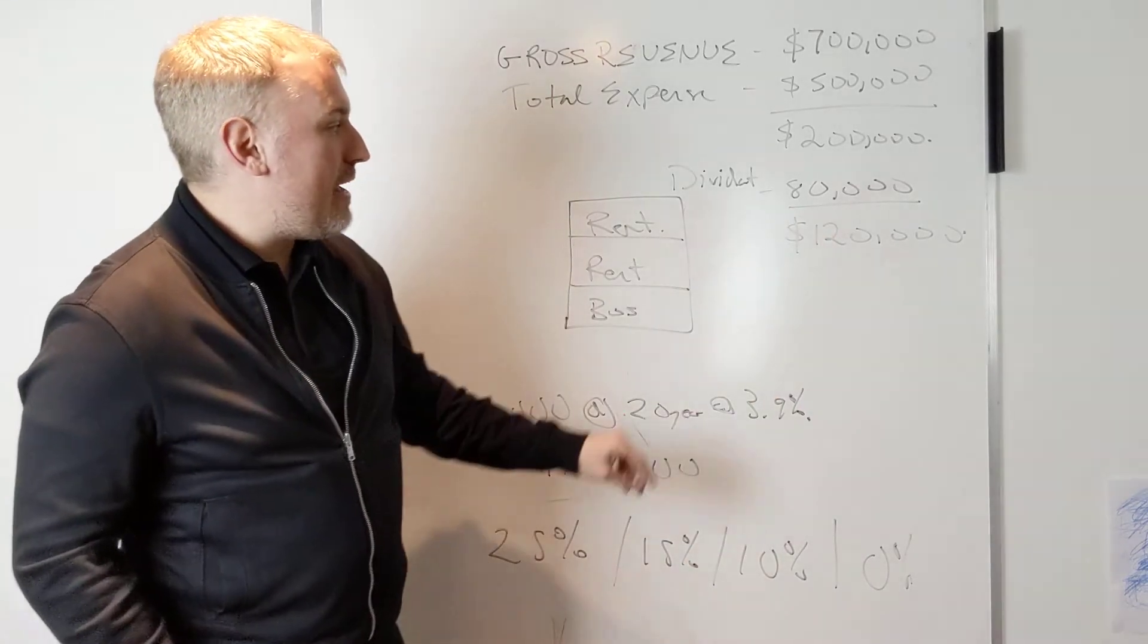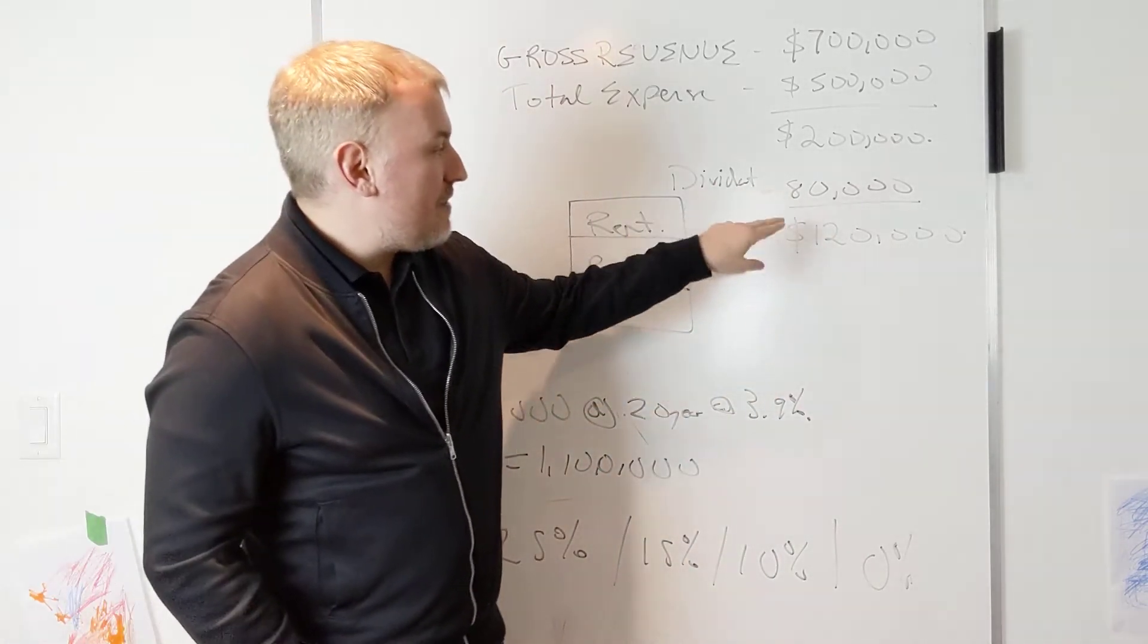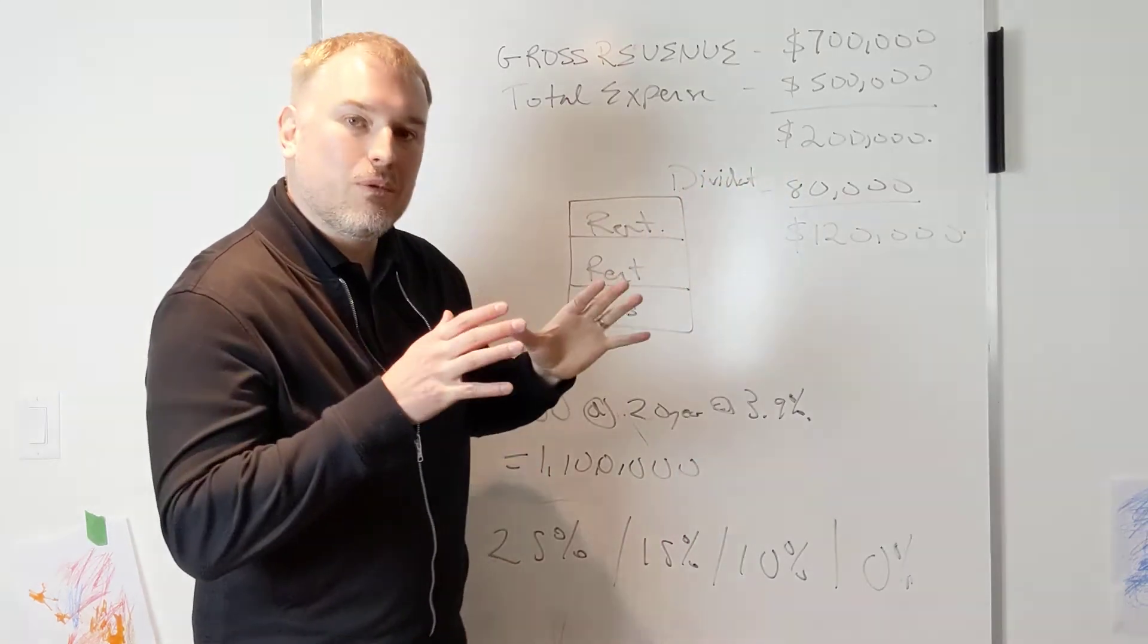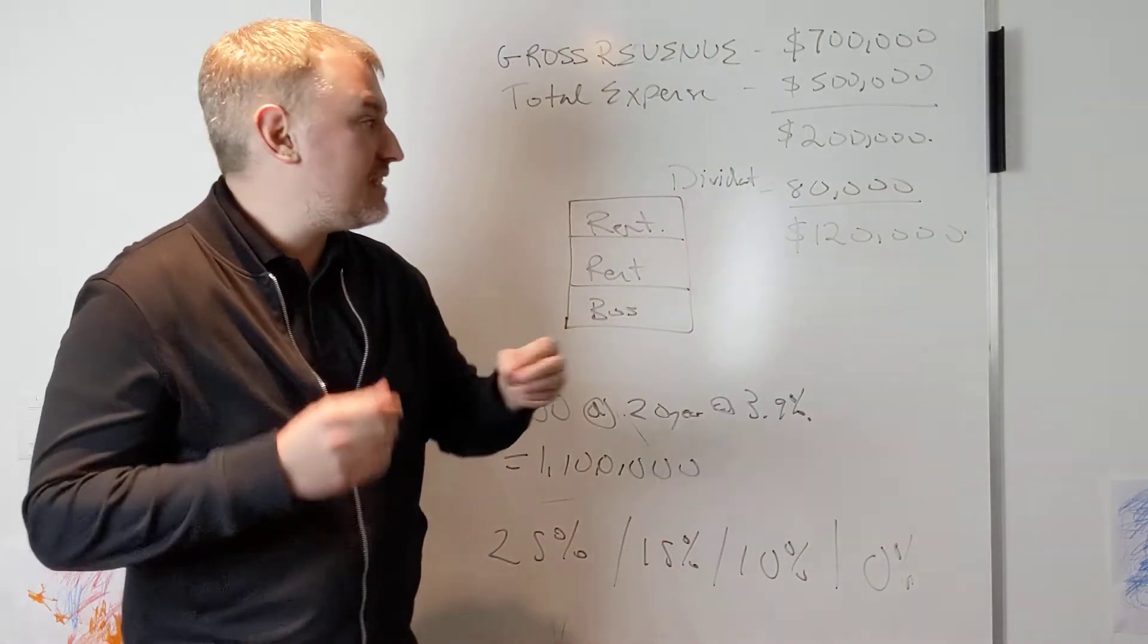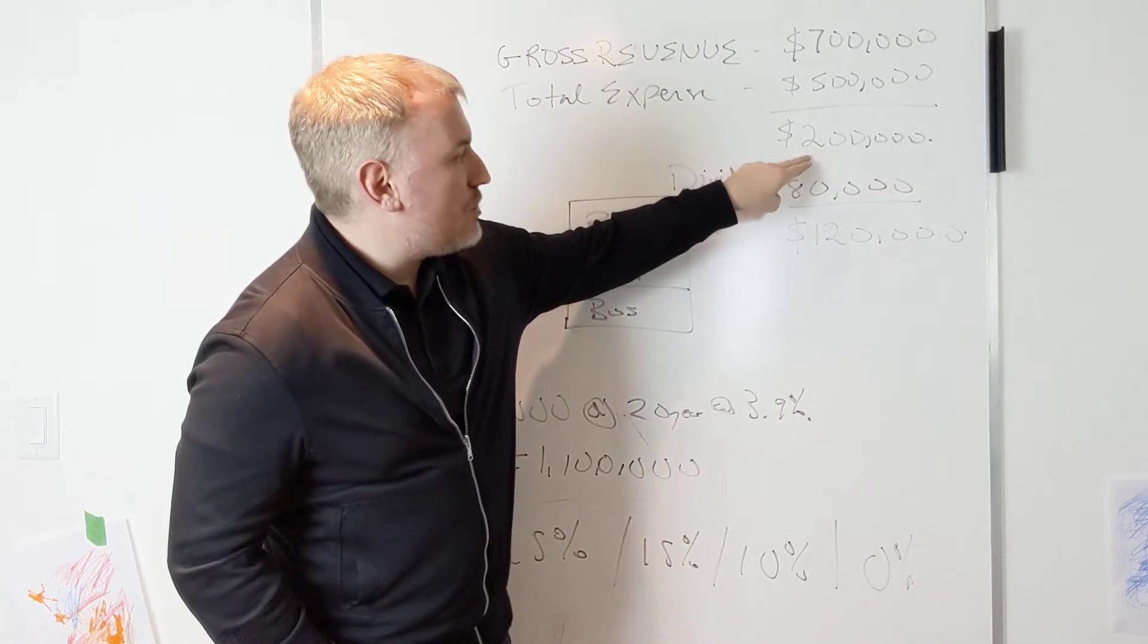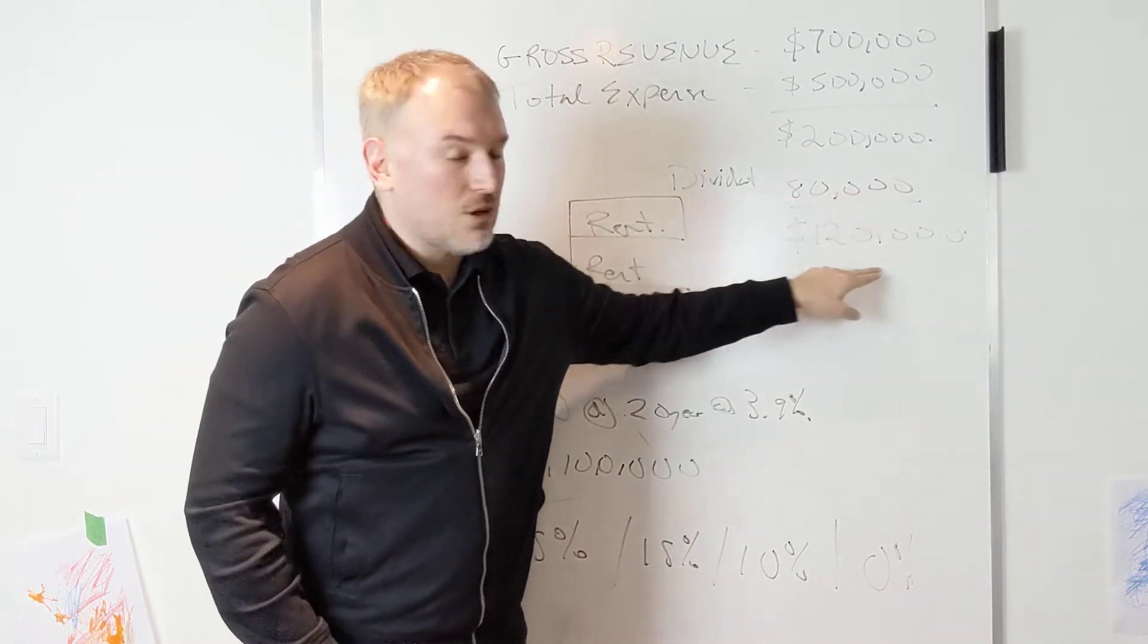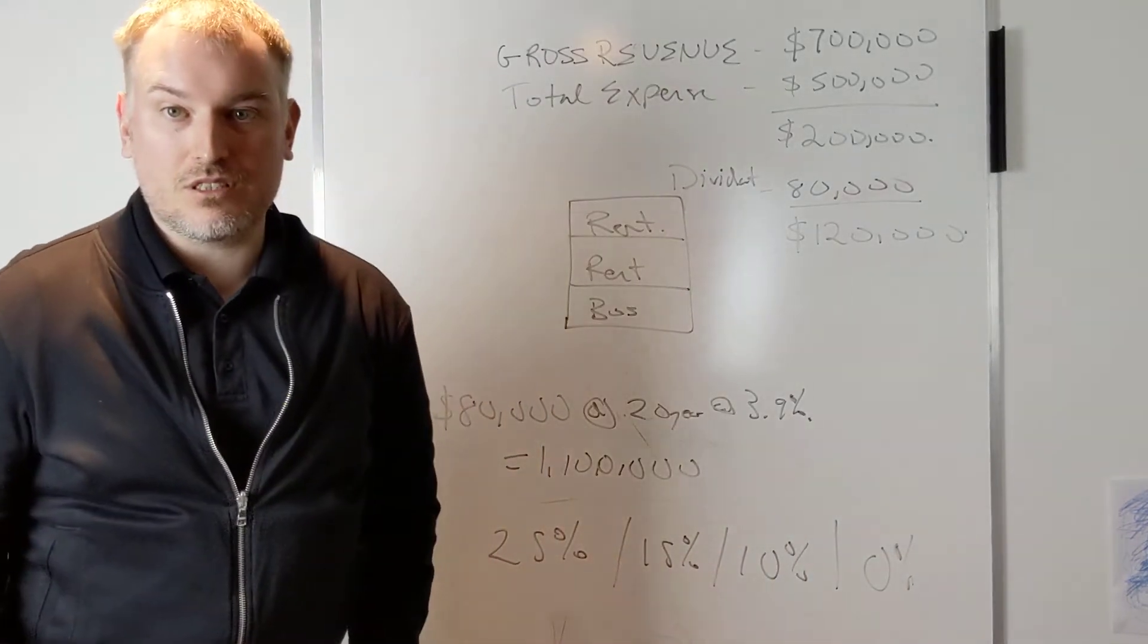So what's going to happen is the bank is going to look at if you paid out the $80,000, they're going to say okay, from a corporate point of view the company itself is not making $200,000, it actually paid its owners $80,000. That means we're only working with $120,000 towards the mortgage payment.